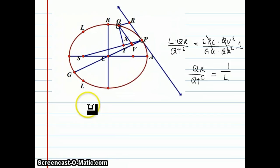But earlier in the series, especially number 4, I showed that the force is equal to QR, or it's proportional to QR over QT squared times PS squared. But this QR over QT squared can be replaced with 1 over L.